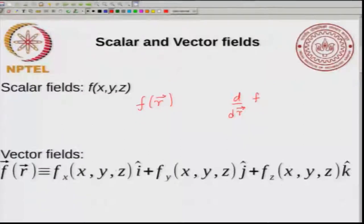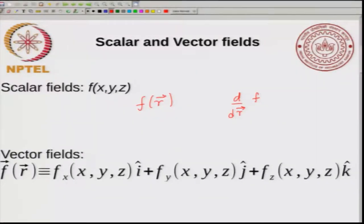Just to remind you, we talked about scalar and vector fields. As you have a function of multiple variables, if you have a three-dimensional vector, then f of x, y, z is a function of a three-dimensional vector. You can write this as f of r, and what you want to imagine is something like a derivative of this function with respect to this vector — something like df by dr, where r is a vector.